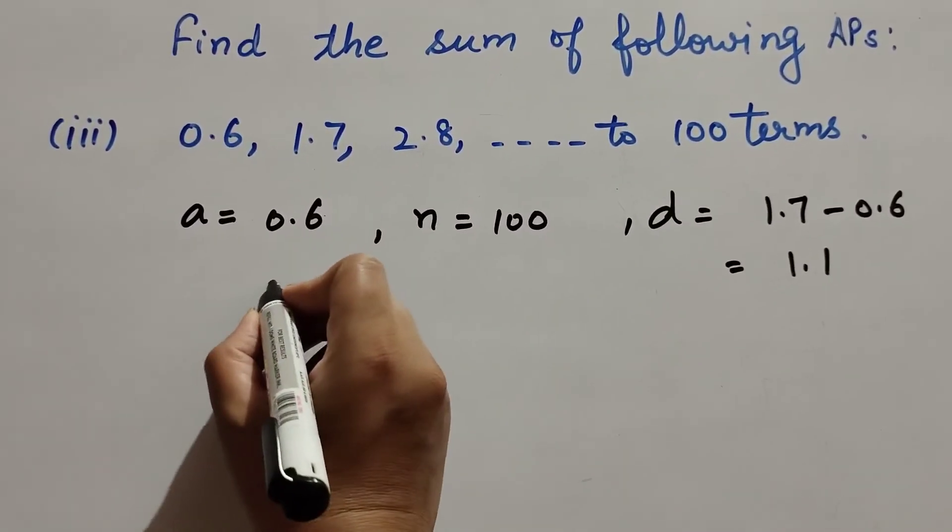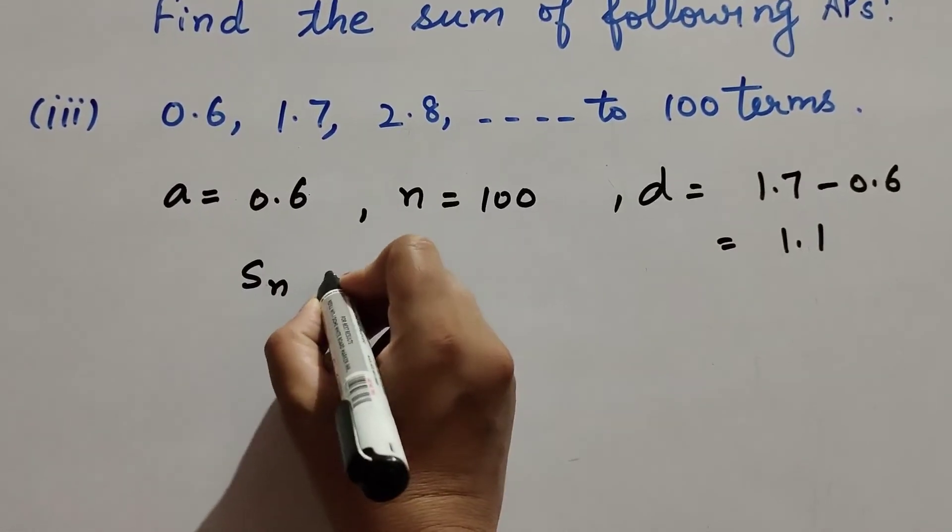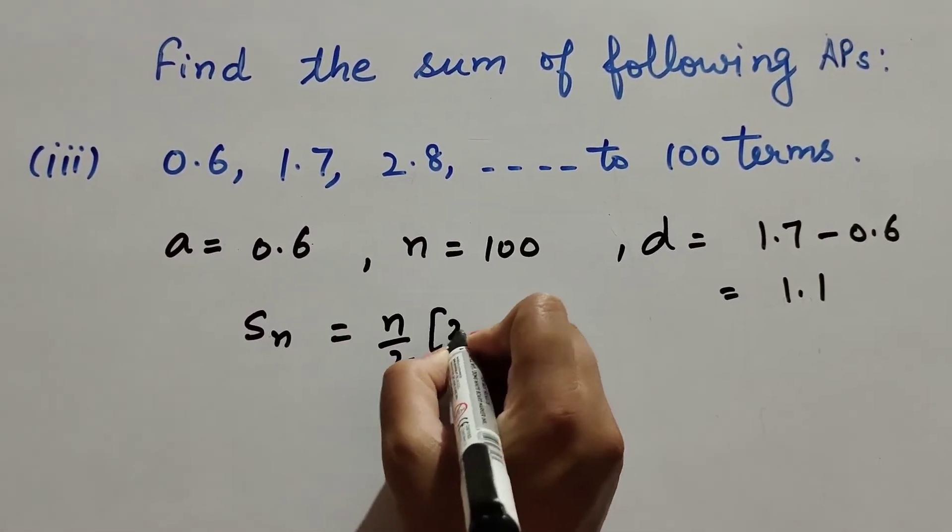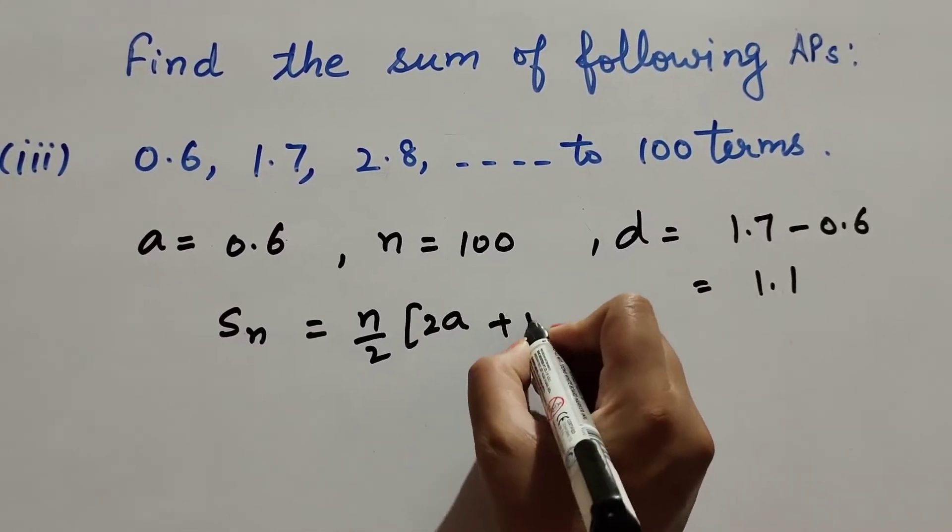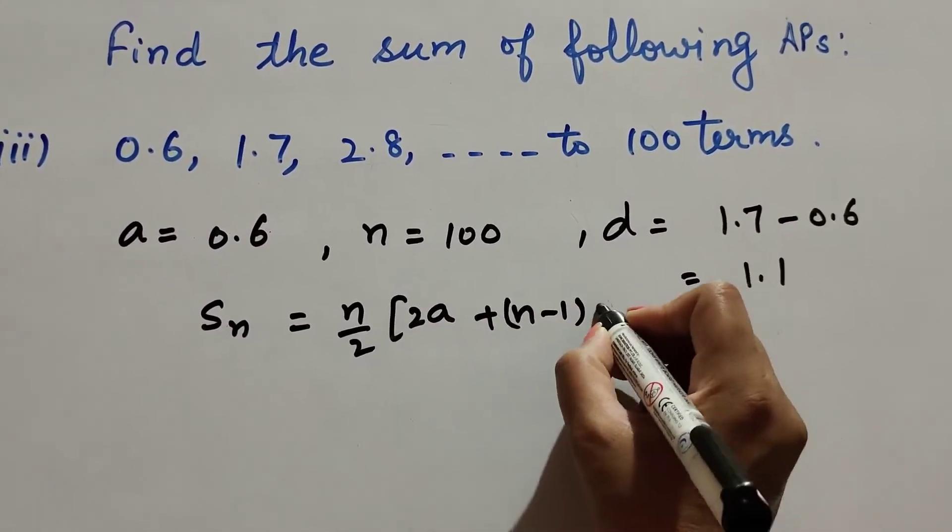We know the formula to find the sum of n number of terms. It is Sn equal to n over 2 into 2a plus n minus 1 into d.